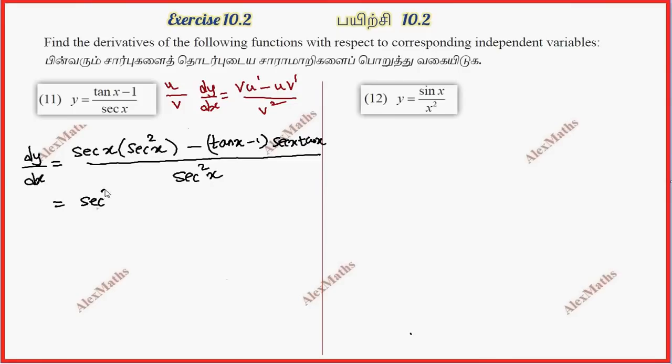Now this is secant cube x minus secant x into tan square x plus secant x into tan x, whole divided by secant square x.